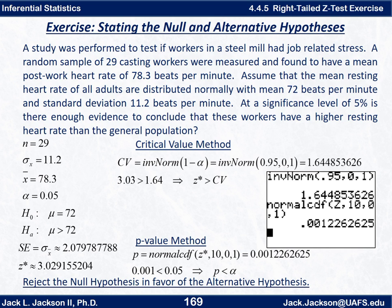At this point we have two choices: the critical value method or the p-value method. If your teacher specifies one, use that; otherwise it's your choice. I personally prefer the p-value method and encourage you to use it when given a choice. To summarize what we know: n = 29, σ_x = 11.2, x-bar = 78.3, α = 0.05, H₀: μ = 72, H₁: μ > 72 (right-tailed). The standard error σ_x̄ ≈ 2.079 is stored as s, mu-naught 72 is stored as m, and z-star is stored as z.